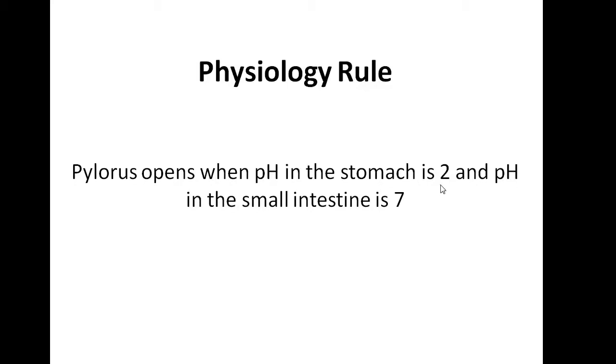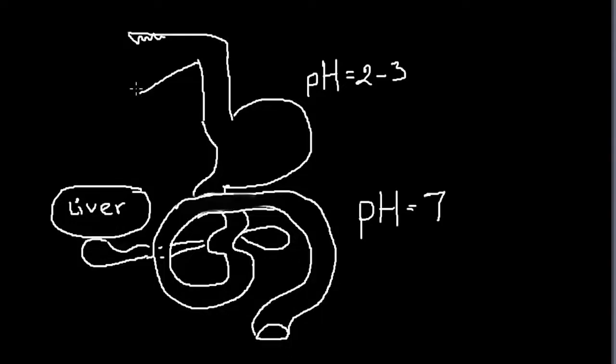Here I already pre-drew the picture of the digestive tract for us. Here is the mouth with the teeth, esophagus, this is the stomach, small intestine... excuse me, lower esophageal sphincter here, pylorus is here, small intestine goes down there. This is the liver and the liver will produce bile and it will come into small intestine. P stays for pancreas and it will produce pancreatic enzymes.